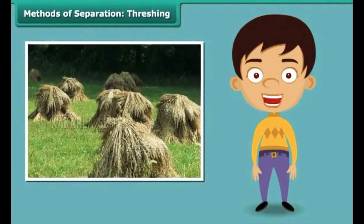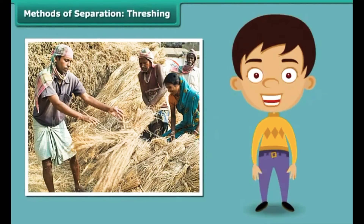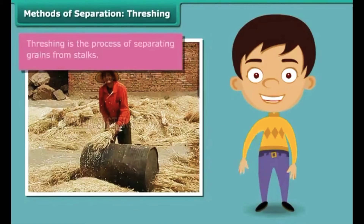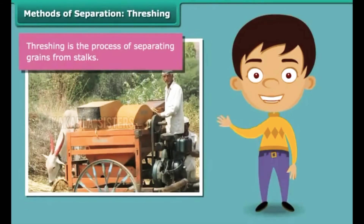You must have seen bundles of wheat or paddy stalks lying in fields after harvest. Have you pondered how a farmer separates the grains from these stalks? Once the wheat or paddy crop is harvested, the farmer ties the stalks together to form bundles. He then leaves them to dry in the sun. Once dried, the farmer beats them against a hard floor to free the grains. This process is known as threshing. Bullocks, oxen and machines known as threshers are also used for this purpose.